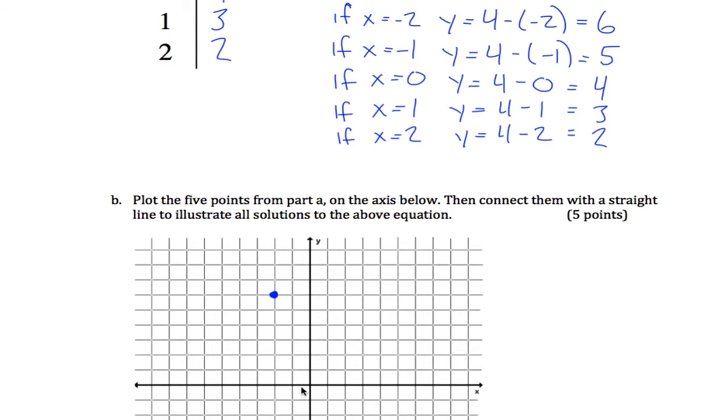When x equals negative 1, y should be equal to 5, so negative 1, 5. When x equals 0, y should be equal to 4. When x is equal to 1, y is equal to 3. And finally, when x equals 2, y is also equal to 2.